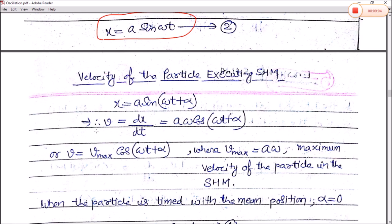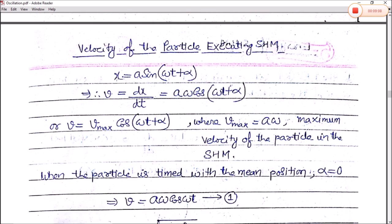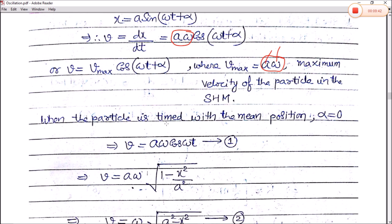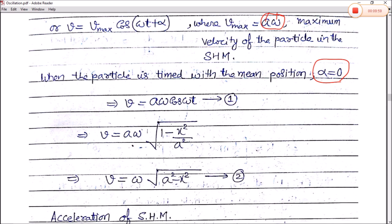The velocity of a particle executing simple harmonic motion: since x equals a sin(ωt plus α), we differentiate to get v equals dx/dt equals Aω cos(ωt plus α). The maximum value of velocity is v_max equals Aω, when cos(ωt plus α) equals 1. Remember that A here is the amplitude, not the acceleration, and ω is the angular frequency.